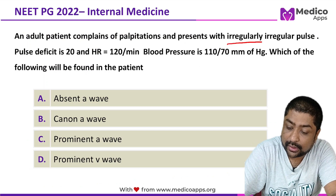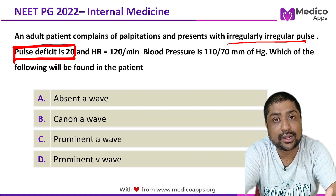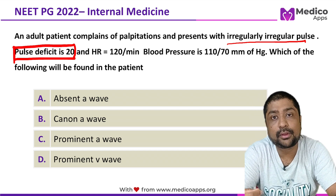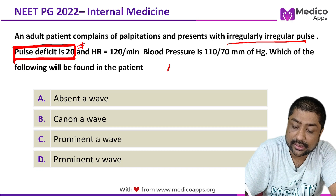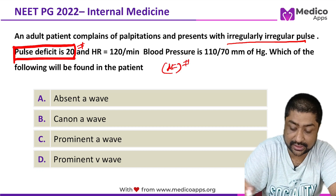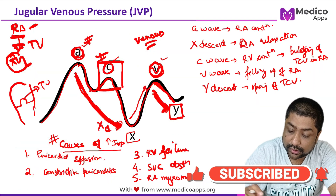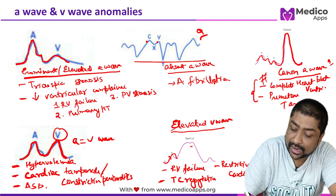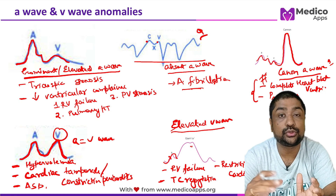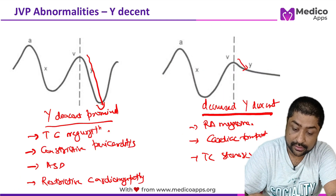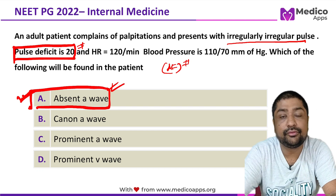Coming back to the original question: the patient has an irregularly irregular pulse with a pulse deficit of 20. This gives us the clinical diagnosis of atrial fibrillation. We have seen that in atrial fibrillation, the A wave is absent — because the atrium is not able to contract, so you do not get the A wave. That is why absent A wave is the correct answer for this patient with atrial fibrillation.